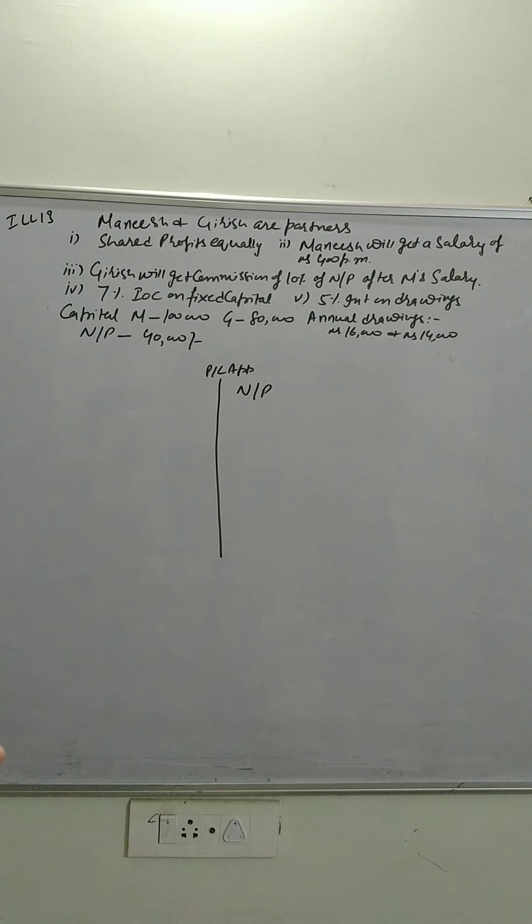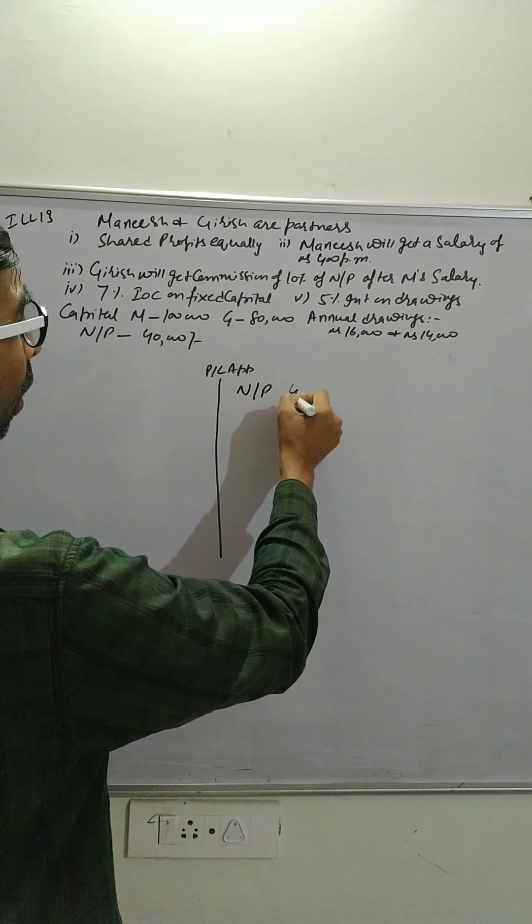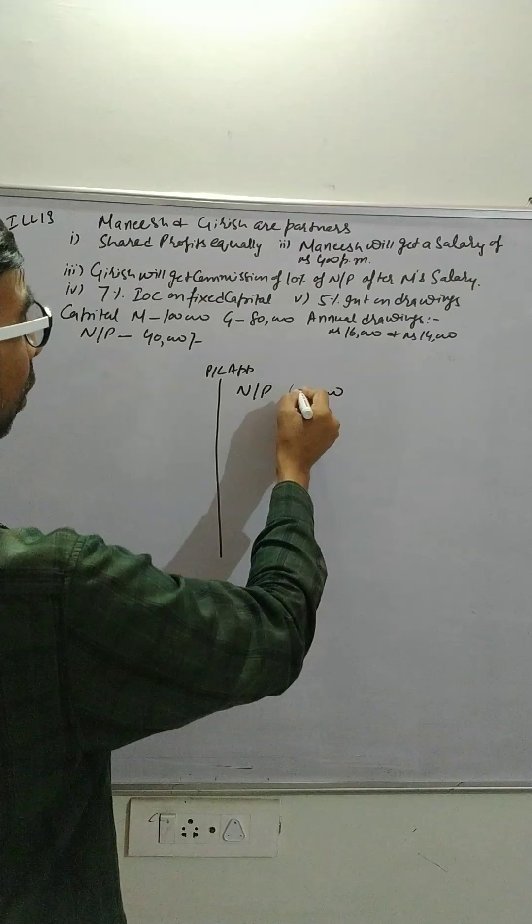It is simply 5%. And secondly, the drawings are specifically written. It is annual drawings that is 16,000 and Rs 14,000. The net profit is 40,000. So here first is 40,000.